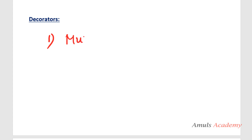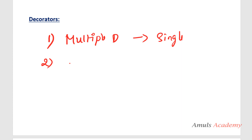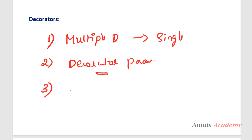First we will see how to use multiple decorators on a single function. Next we will see if a decorator contains parameters, then how to use it — decorator with parameters. In the previous example we saw a function with parameters, but if the decorator itself contains parameters, we will see how to use it today. And lastly, how to use a single decorator on multiple functions — that is, how to write a general decorator. We will discuss these three concepts today.